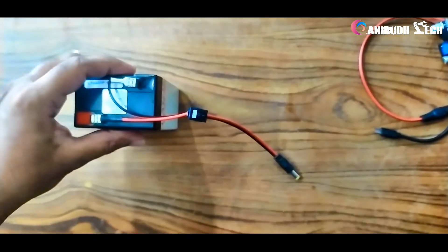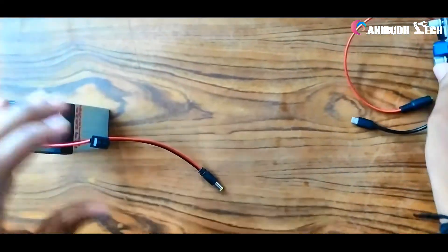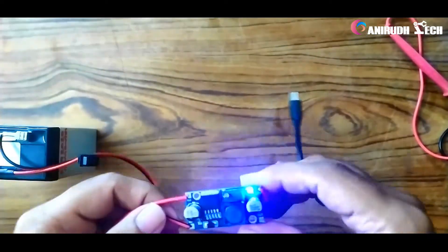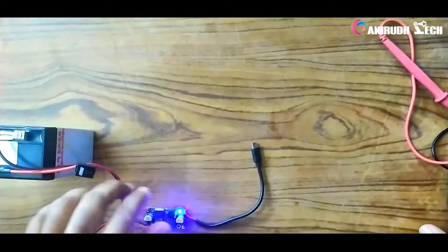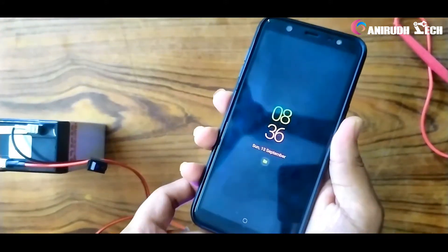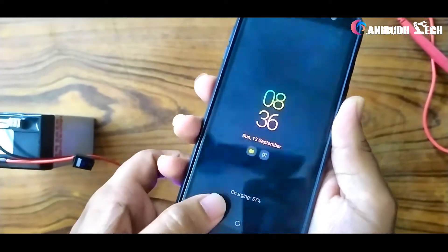For charging my devices I need 5 volt, so for step down I'm using a buck converter here. Now you can check it's charging a mobile phone. You can see it's charging.